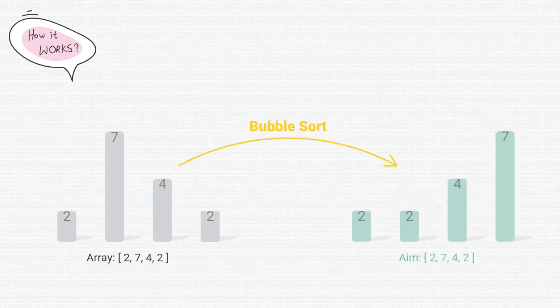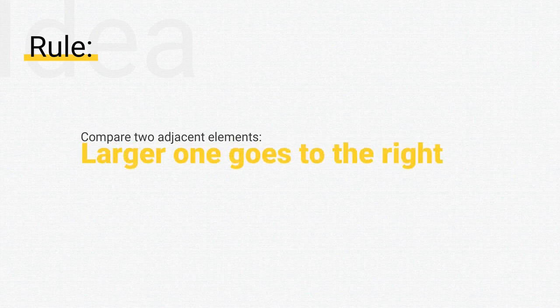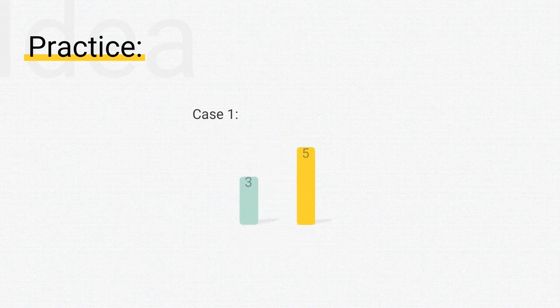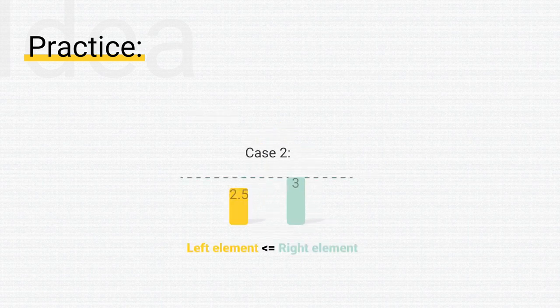When playing games, we need rules — it's the same here. The idea is to compare the adjacent two elements. The larger one goes to the right, so if the one on the left is larger than the one on the right, then they swap their position. Otherwise, we do nothing.